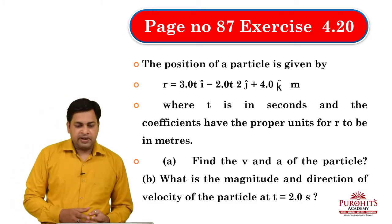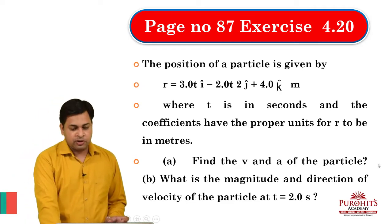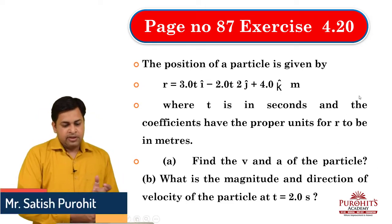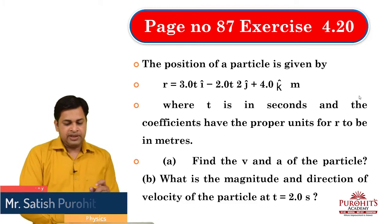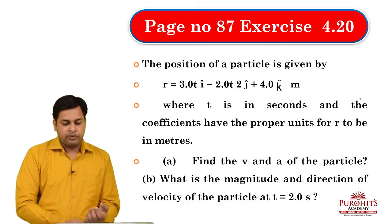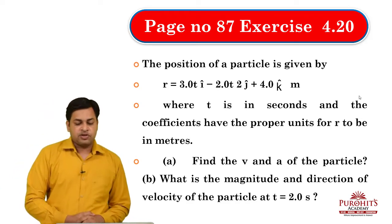Welcome student. Page number 87, exercise 4.20. The position of a particle is given by r = 3t î - 2t² ĵ + 4t k̂ meters, where t is in seconds and the coefficients have the proper units for the r vector to be in meters.